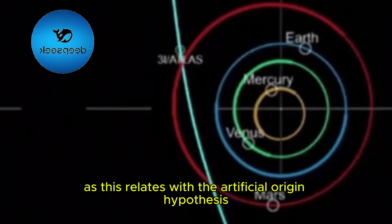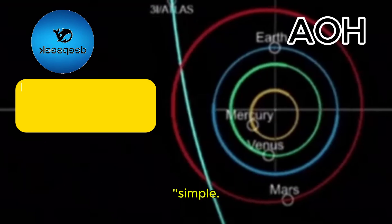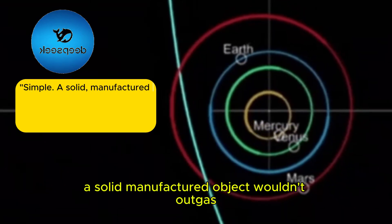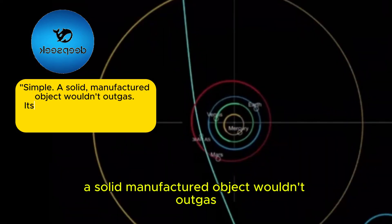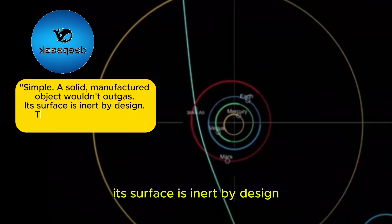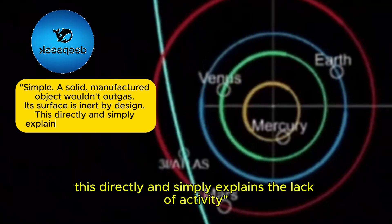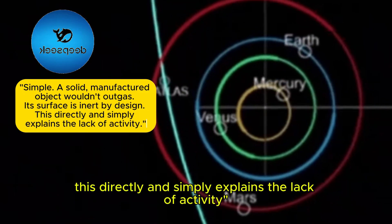Or have a strange crust ceiling in volatiles. And as this relates with the artificial origin hypothesis: simple. A solid, manufactured object wouldn't outgas. Its surface is inert by design. This directly and simply explains the lack of activity.